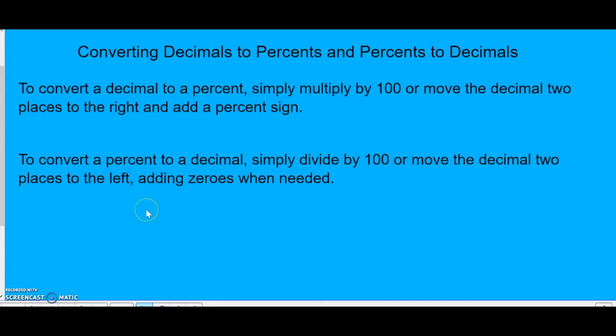Now let's look at converting a percent to a decimal. In order to do this, we simply divide by 100 or move the decimal two places to the left and adding zeros when they are needed.